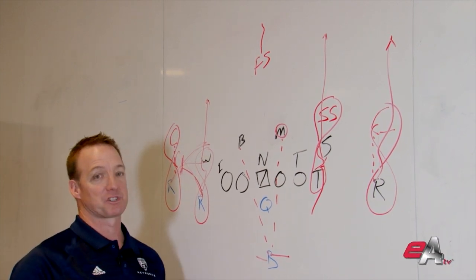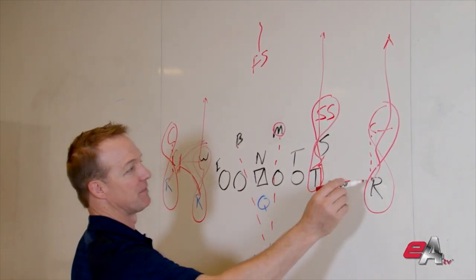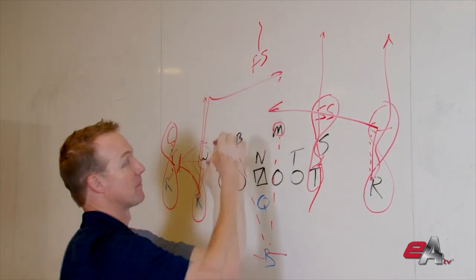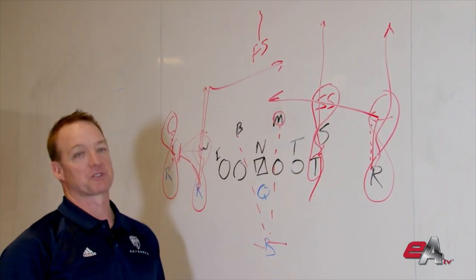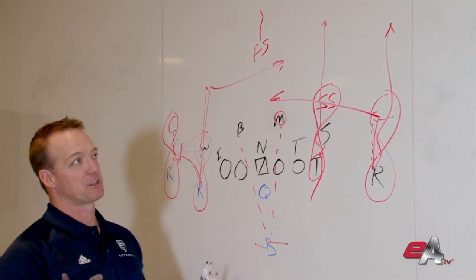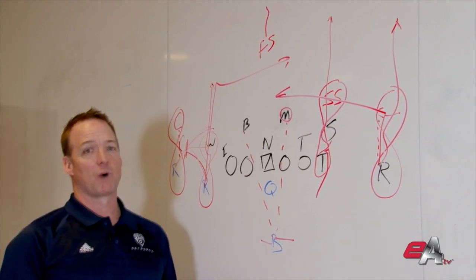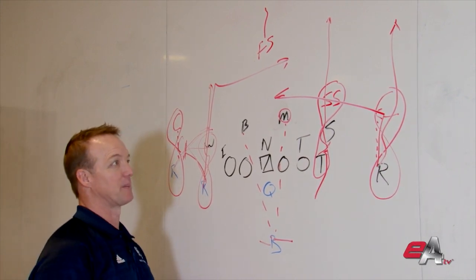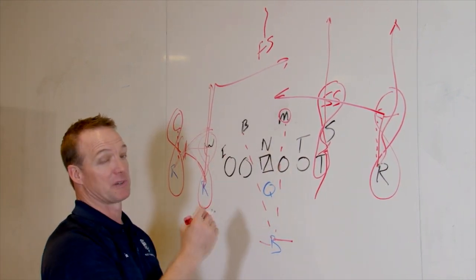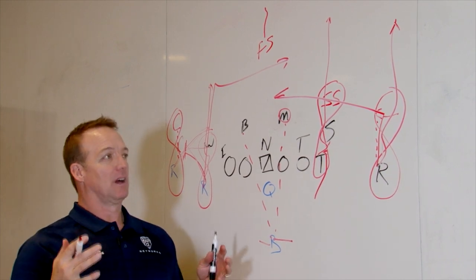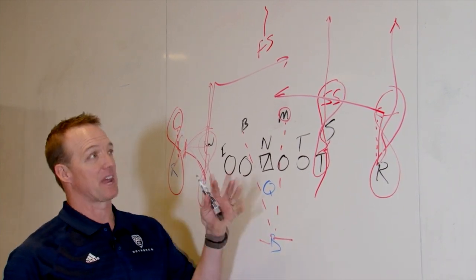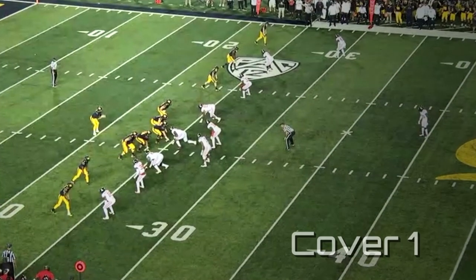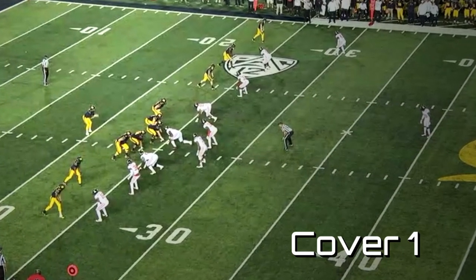And then, of course, versus man, flat crossing routes are always great. You want to run away from coverage. And so, crossing routes are always great versus man. So, that's some of the strengths, some of the weaknesses versus cover one. You'll see some of this when teams want to bring one extra man in pressure because you're going to have one linebacker who's freed up who can come. So, if you get a cover one look, understand that's what you're going to get. Understand what the strengths and weaknesses are. And the more you know about a coverage and what a team's trying to do to you, the better you can be at the position.